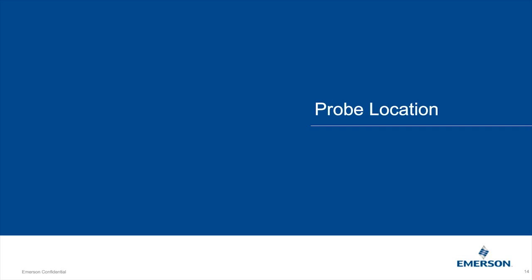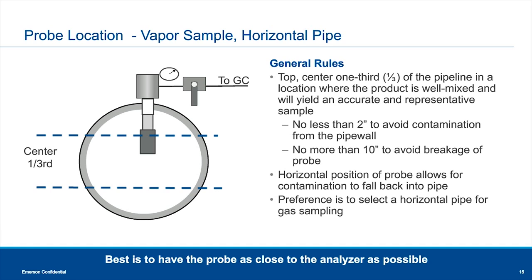For probe location with a vapor sample in a horizontal pipe, the ideal position is center one-third — the probe should be about one-third of the way down in the center section. Getting too close to the pipe wall picks up contamination. Probe length should be between 2 and 10 inches — no longer than 10 inches, as a long thin probe hanging in a pipeline can snap from a sudden gas flow, sending it downstream.